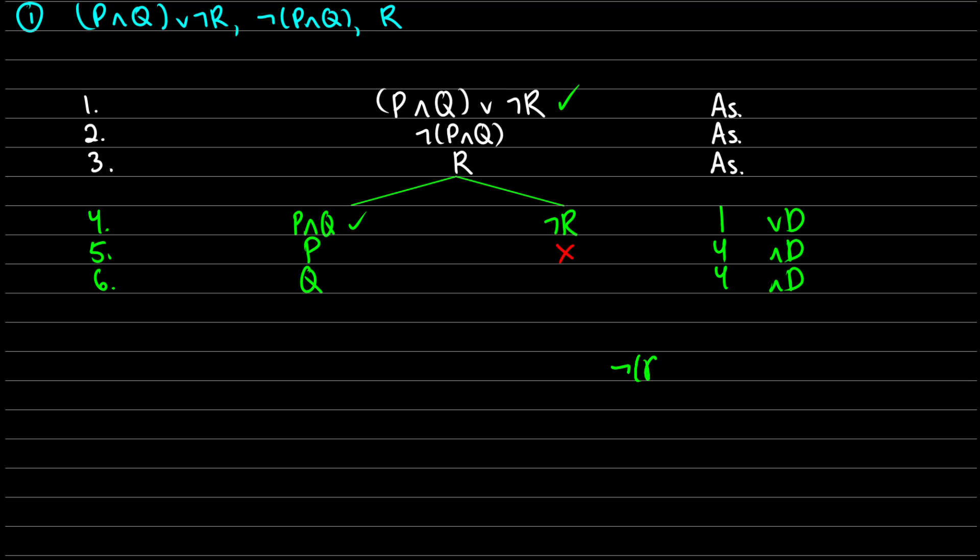So ¬(P∧Q) is true when P∧Q is false. Now this means that either P is false or Q is false, which means that ¬P is true or ¬Q is true. So when we branch this off here, on one side we're going to get ¬P is true and on the other side we're going to get ¬Q as being true. So we'll call this one line seven, this comes from line two, and this is not and decomposition.